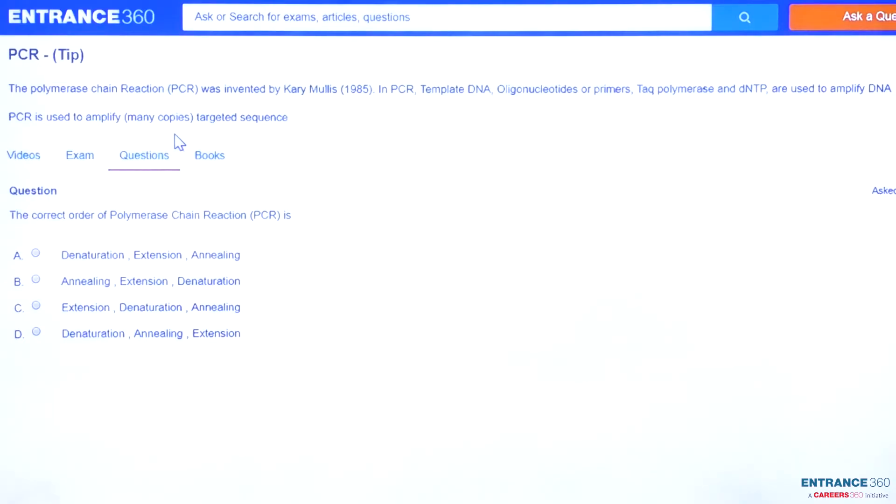In this question they are asking the correct order of polymerase chain reaction, that is PCR. These options are denaturation, extension, annealing; second one annealing, extension, and denaturation; third one extension, denaturation, and annealing; and the last one denaturation, annealing, and extension.